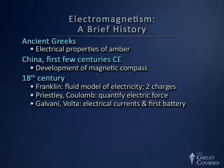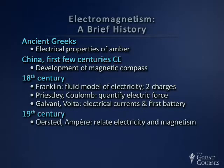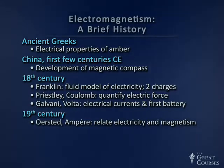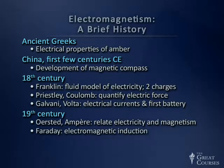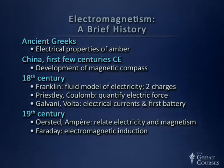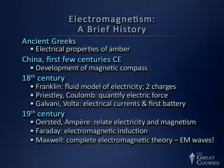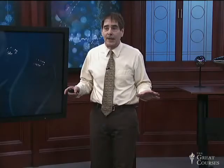Galvani and Volta at about the same time developed the first battery in 1800 and studied electric currents, often generated in biological systems — famous experiments with frogs' legs. By the 19th century, Ørsted and Ampere determined relationships between electricity and magnetism. Michael Faraday discovered electromagnetic induction. And finally, James Clerk Maxwell completed our electromagnetic theory in the 1860s, when the classical physics version of electromagnetism became complete.